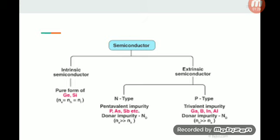When a small amount of trivalent impurity like boron or aluminum is added to the pure semiconductor or intrinsic semiconductor, it is known as p-type semiconductor.